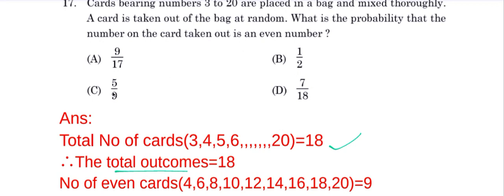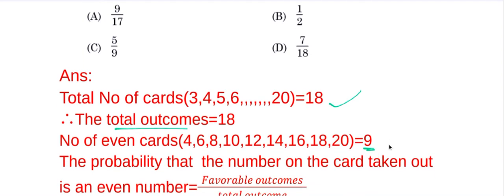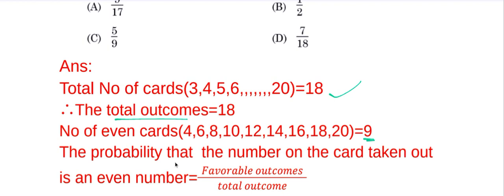We have to find the probability that the number on the card is an even number. The even numbers are 4, 6, 8, 10, 12, 14, 16, 18, and 20. So the total number of even cards is 9.